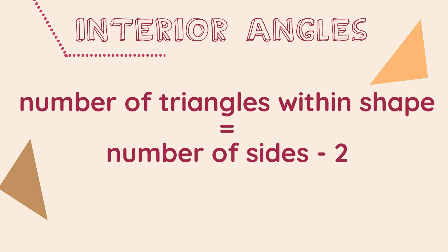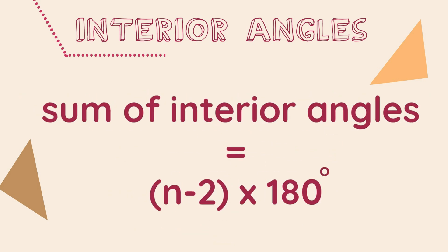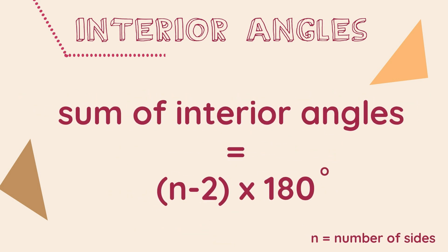Have you noticed a pattern? The number of triangles which can perfectly fit inside any polygon will always be equal to two less than the number of sides of that polygon. This allows us to create a formula to calculate the sum of the interior angles for any polygon: the sum of the interior angles equals (n − 2) × 180 degrees, where n is the number of sides.